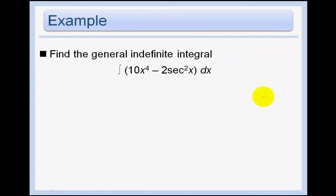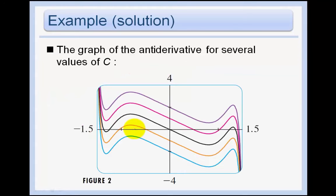Find the general indefinite integral. So we just need to go backwards here. The antiderivative of this, so we have 10 times the antiderivative of x to the 4th, add 1, and then just divide minus 2. The antiderivative of secant squared, remember, is just tangent. And then don't forget your plus c. So we have 2x to the 5th minus 2 tan x plus c. And here's just the graph of the antiderivative for several different values of c.